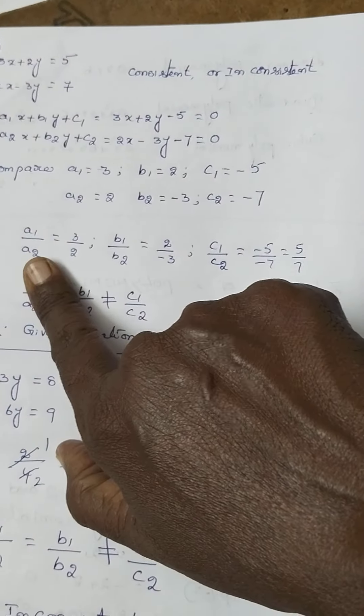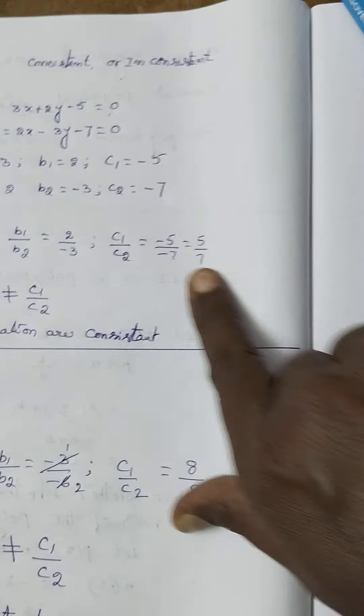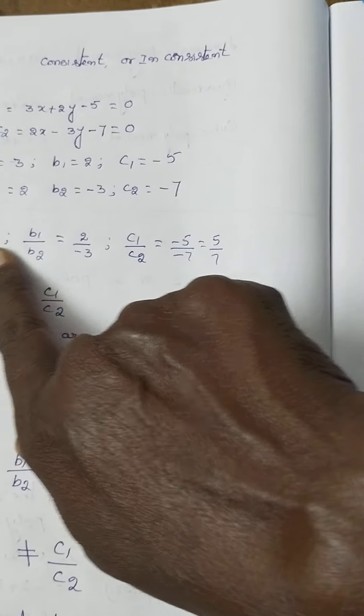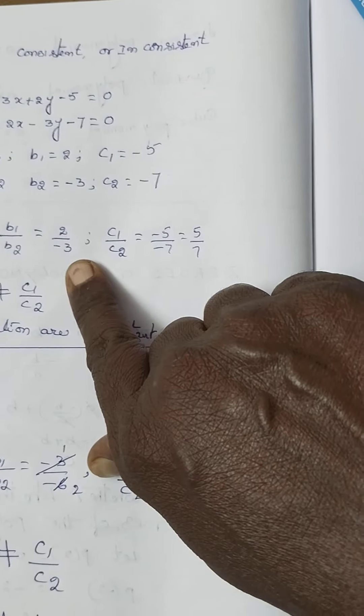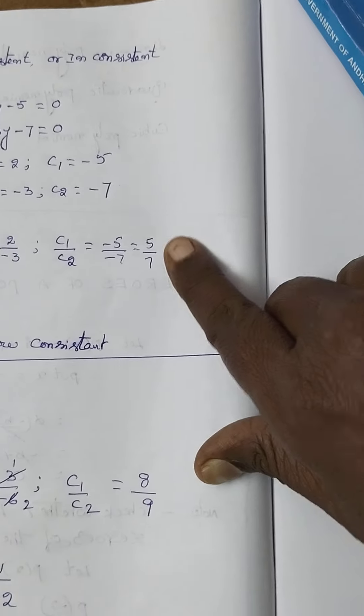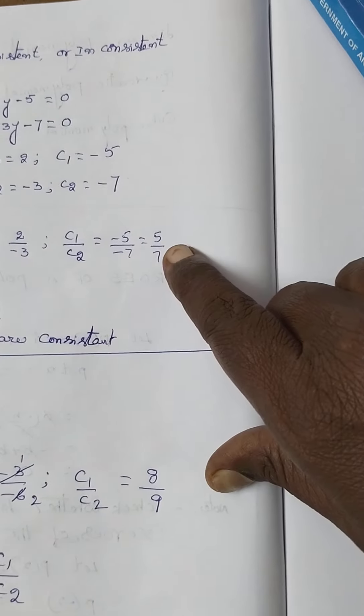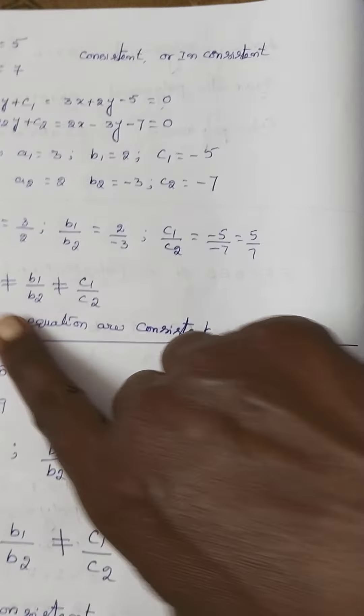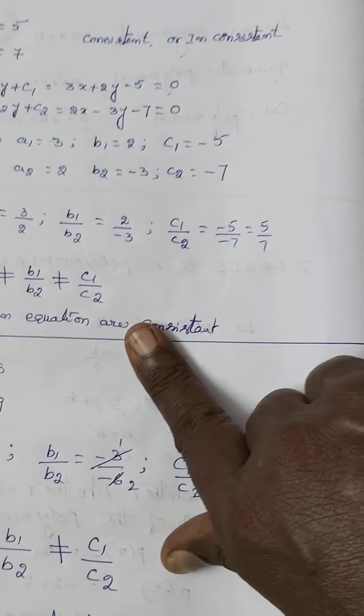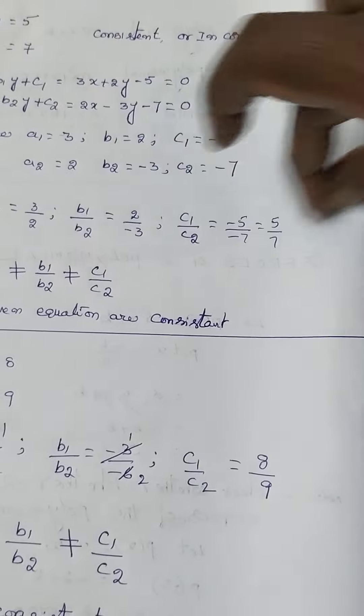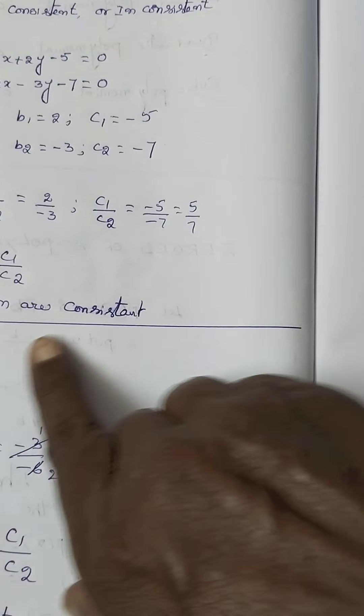So, here A1 by A2, B1 by B2, C1 by C2. Compare: A1 by A2 is 3 by 2, B1 by B2 is 2 by minus 3, C1 is equal to 5 by 7, minus and minus plus, so it becomes 5 by 7. So, A1 by A2 is not equal to B1 by B2 is not equal to C1 by C2. These 3 are not equal, so the given equations are consistent.